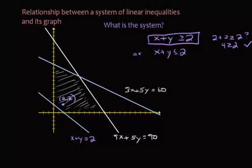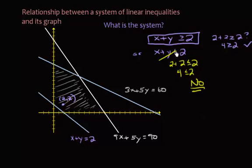Just to verify, what happens if you use point 2 comma 2 with the other inequality? It would be 2 plus 2 less than or equal to 2. That would be 4 less than or equal to 2, and that is not true. So that would be the bad inequality. So here's our first inequality: x plus y greater than or equal to 2.